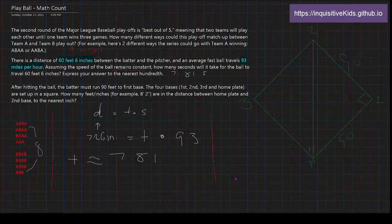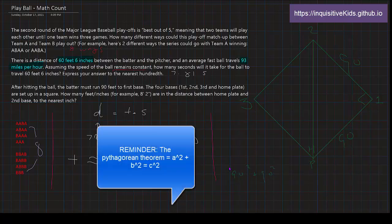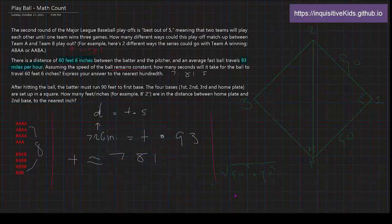And we could do 90 feet squared plus 90 feet squared. What's 90 feet squared? That's 90 times 90, which is 8,100. 8,100 times 2 would be 16,200. And to the nearest inch, that is about 127. Okay, so then that is our answer, 127 feet.